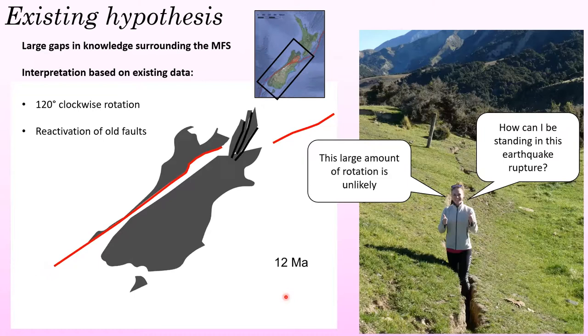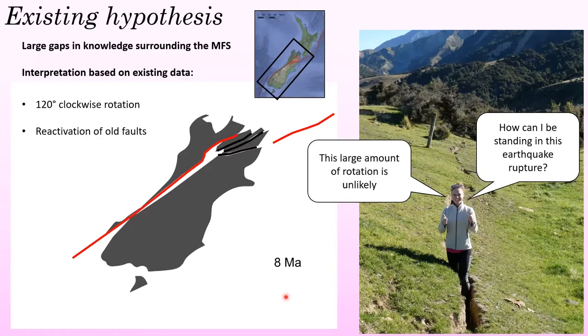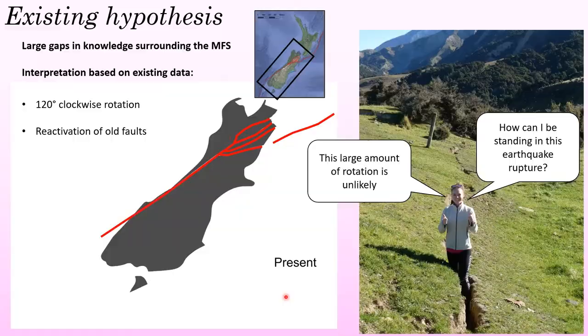This large amount of rotation is extremely unlikely — how can this whole block just rotate in space? It doesn't make sense geologically. And if there are these old faults in the earth's crust acting as pre-existing weaknesses, how can I be standing here in this earthquake rupture that didn't occur on one of these pre-existing weaknesses? With this in mind, I set out to design my own investigation into the development of the Marlborough fault system.